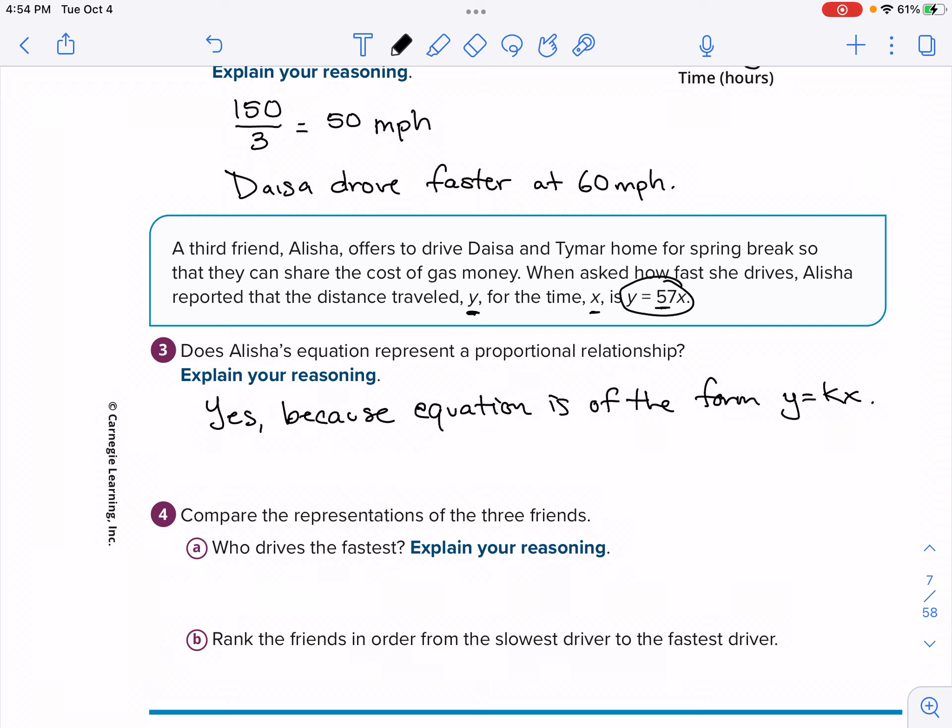We just have Y equal to, there's some type of number right before X. Now for this, the constant proportionality for Alisha, we could put constant proportionality, but I'm just going to put K, K is equal to 57. Since there are no added values, like I'll give you an example of something that isn't proportional. If you had Y equal to 57X plus 5, that plus 5 is a reason that it will be not proportional. But let's look at, so this tells us that she's going 57 miles per hour.